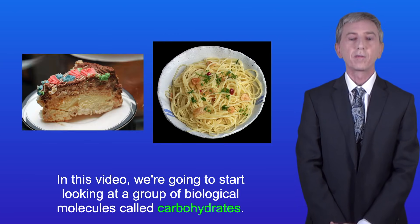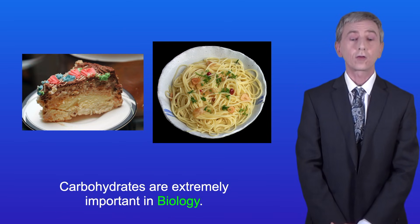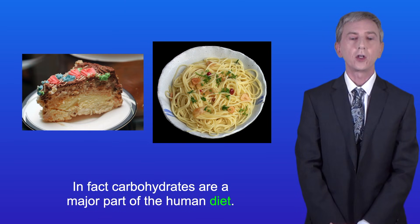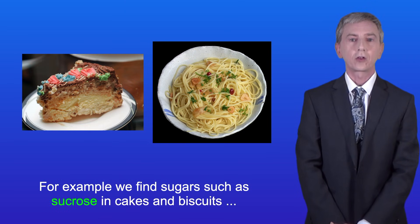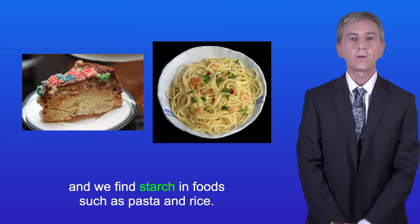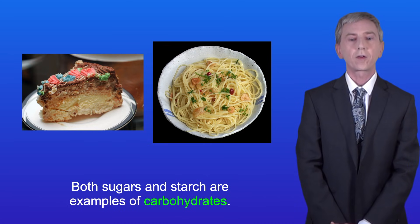In this video we're going to start looking at a group of biological molecules called carbohydrates. Carbohydrates are extremely important in biology and in fact are a major part of the human diet. For example, we find sugars such as sucrose in cakes and biscuits and we find starch in foods such as pasta and rice. Both sugars and starch are examples of carbohydrates.